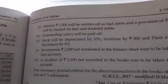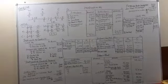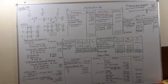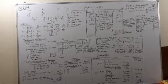Pass necessary journal entries for the above transactions in the books of the firm on C's admission. I am not just passing general entries in this question — I am doing this question where all nine steps will be taken into consideration. Tomorrow I will do this question again by just passing the journal entries.